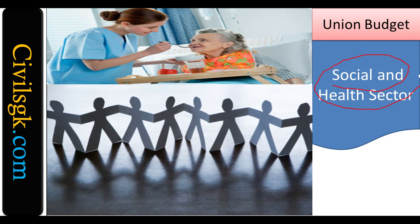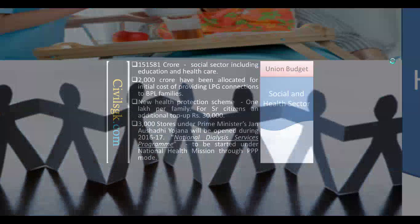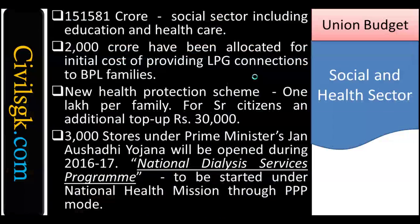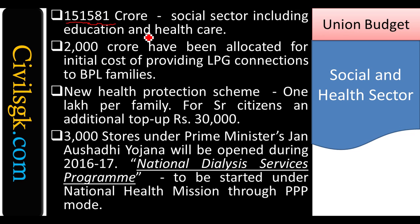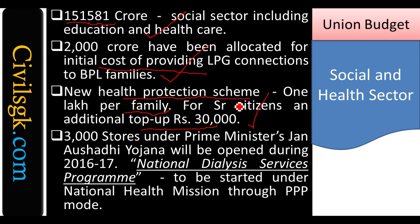Under Social and Health Sector, ₹1,51,581 crores was allocated, including both education and health. ₹2,000 crores was allocated for providing initial LPG connections to BPL families, so there will be no wood burning, no smoke pollution. A new health protection scheme provides ₹1 lakh per family, with an additional top-up of ₹30,000 for senior citizens. 3,000 stores of PM Jan Aushadhi Yojana will be opened during 2016-17, and a National Dialysis Service Programme was launched under PPP.